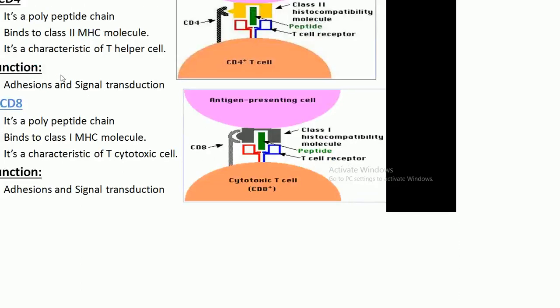The second receptor is CD3, which is present on all T cells and functions in signal transduction. And CD4, which is a polypeptide chain that binds to class 2 MHC molecules, characteristic of T helper cells, and its function is in adhesion and signal transduction. Another receptor is CD8, which is also a polypeptide chain that binds to MHC class 1 molecules, characteristic of cytotoxic T cells, and functions in adhesion and signal transduction.